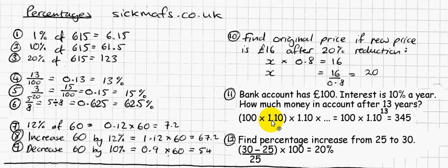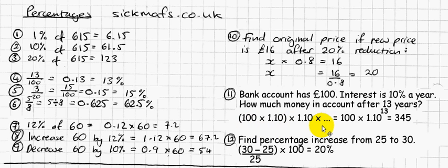The shortcut for that is simply to do 100 × 1.10^13, because all I'm doing is multiplying by 1.10 again and again, 13 times. That gives me roughly £345 after 13 years.